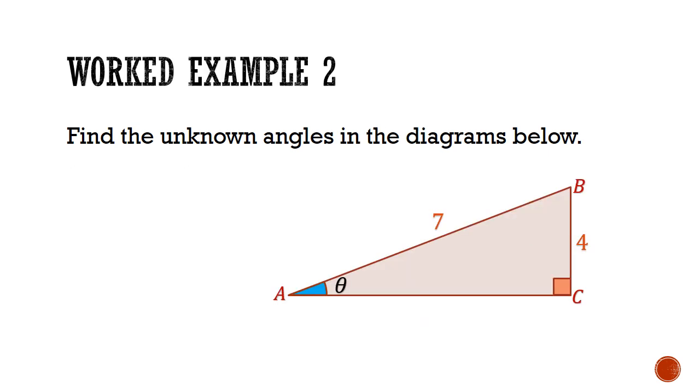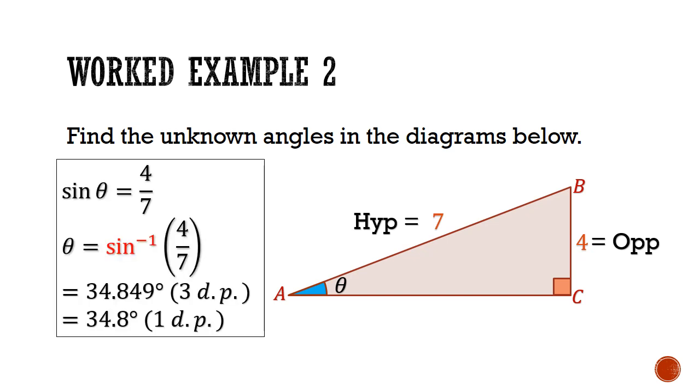Now let's look at a work example for finding unknown angles. Similar to finding unknown lengths, we should also begin by labeling the sides based on the reference angle. Here, we have an opposite side of 4, and a hypotenuse of 7. Sin theta is equal to opposite 4 divided by hypotenuse 7. And to find the value of theta, we have to undo the sine function. This is the inverse sine function, and this will give us 34.8 degrees rounded off to 1 decimal place.